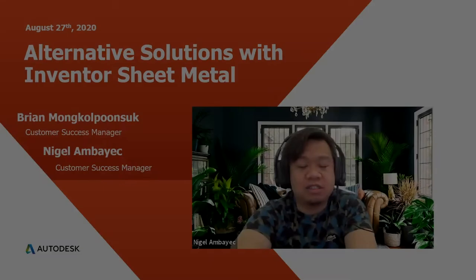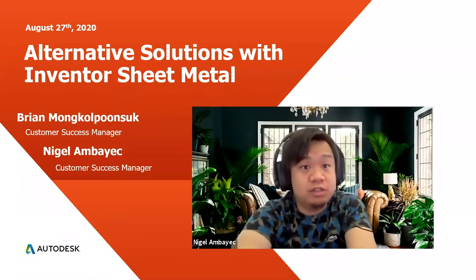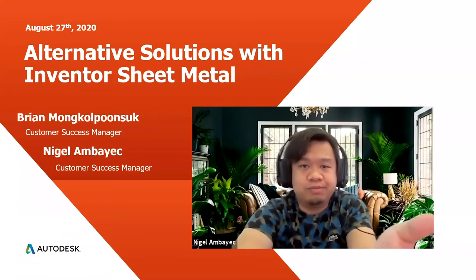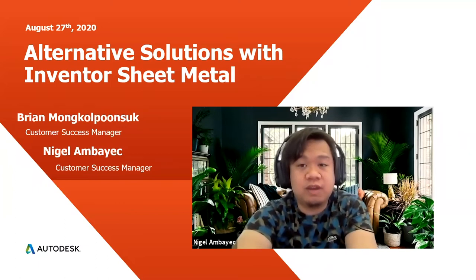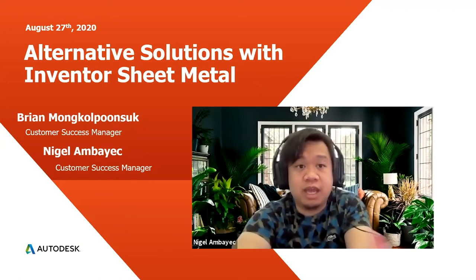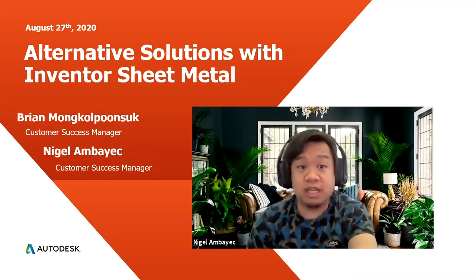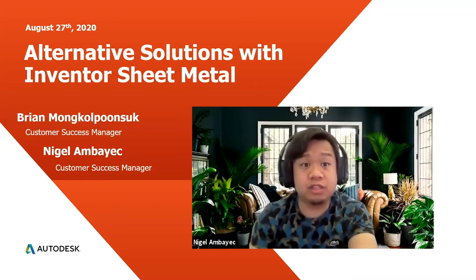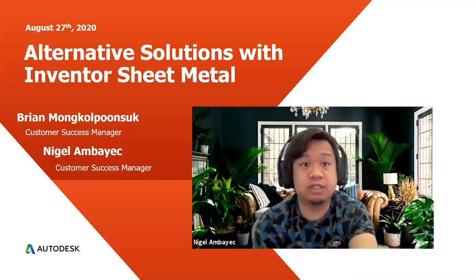Brian is going to be going over something really awesome today, specifically Inventor Sheet Metal. We've done Inventor Sheet Metal in the past before, generally how to utilize the functionality within the software, and a lot of our customers use it on a daily basis. When using Sheet Metal, there's a lot of intricacies with how Sheet Metal interprets things like bends, cuts, and things along that nature. People always ask us questions: how do I do this complex thing? How do I flatten this complex part? And that's kind of what we're here for today.